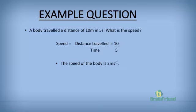Let's look at a simple example. A body travels a distance of 10 meters in 5 seconds. What will be the speed? Speed is given by distance divided by time — 10 meters divided by 5 seconds — so the speed of the body will be 2 meters per second.